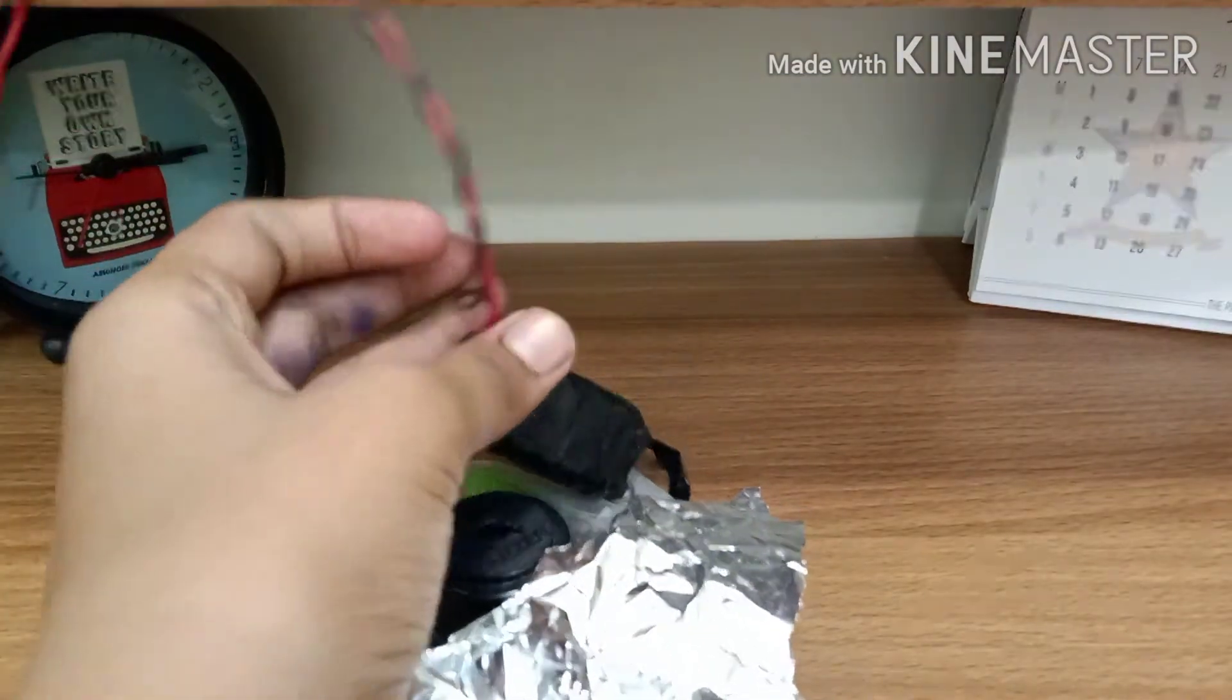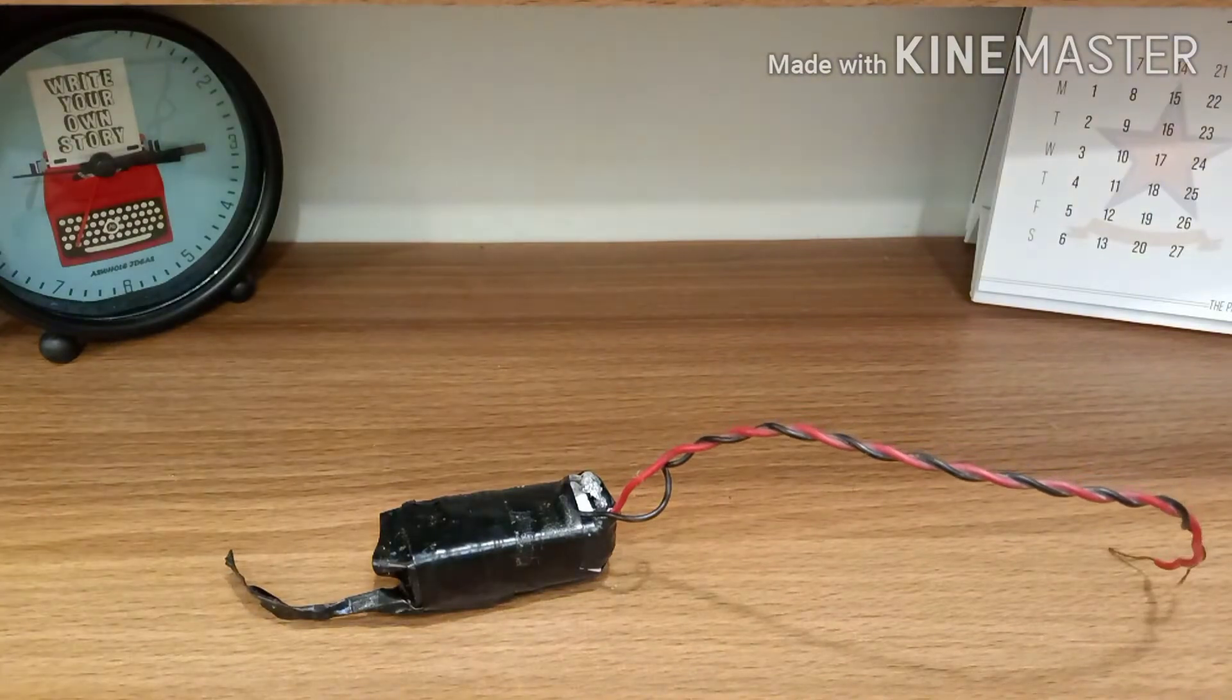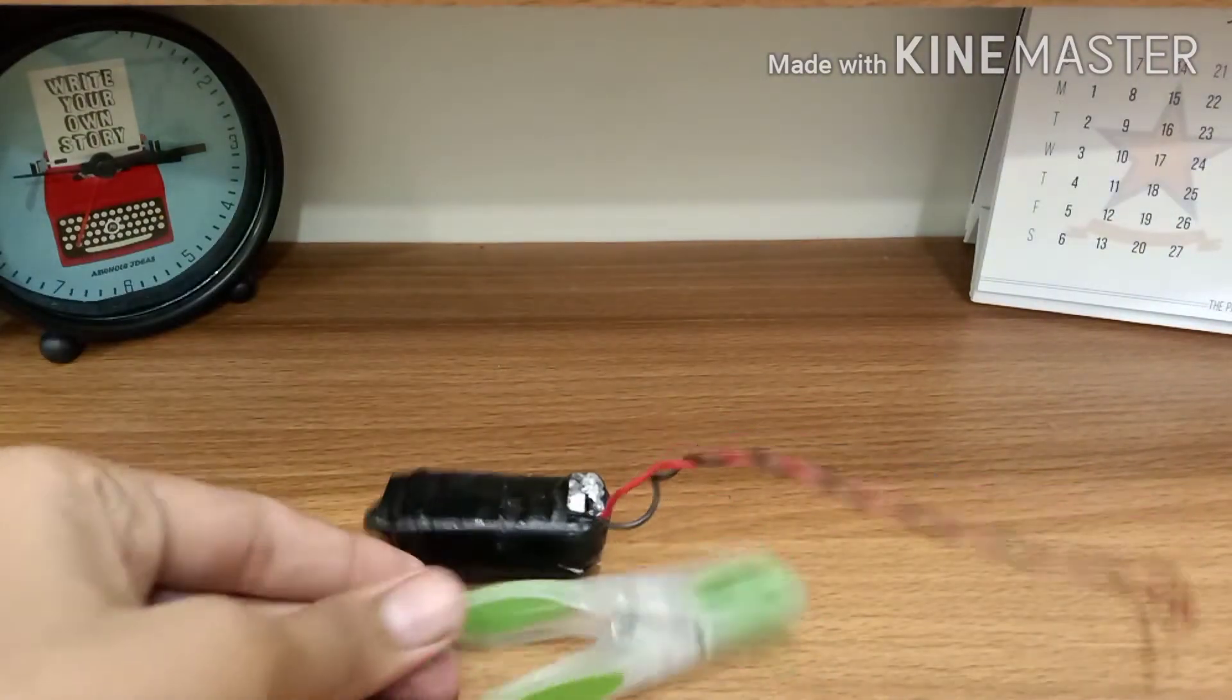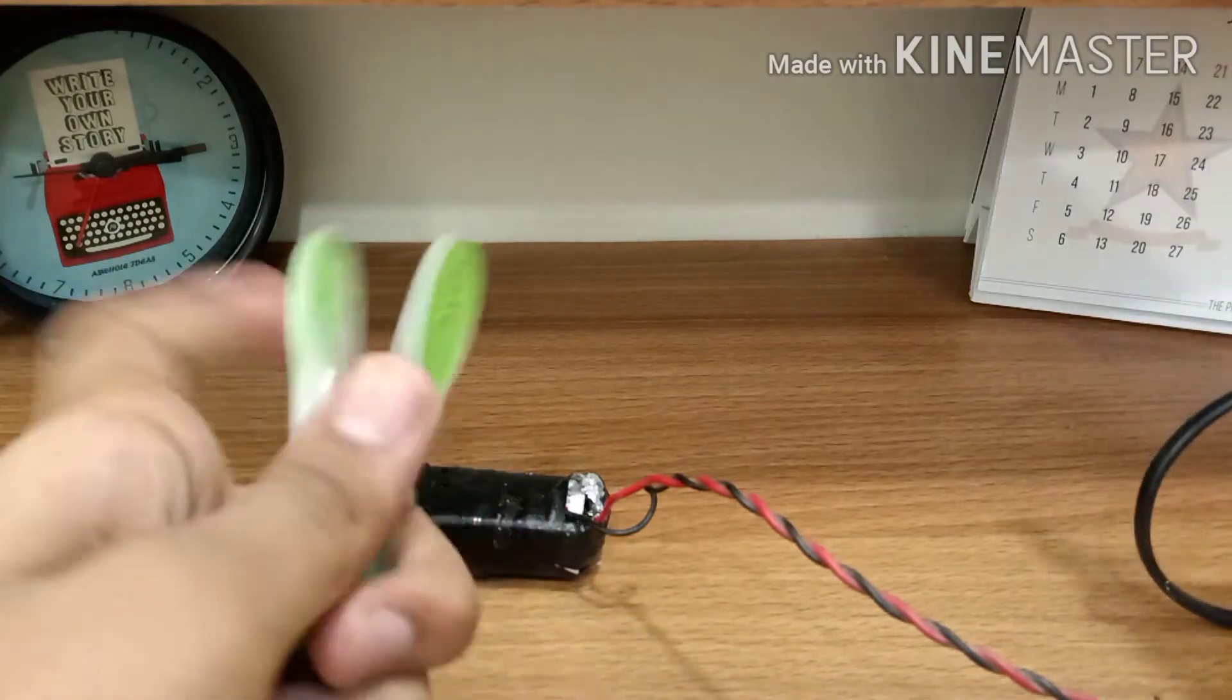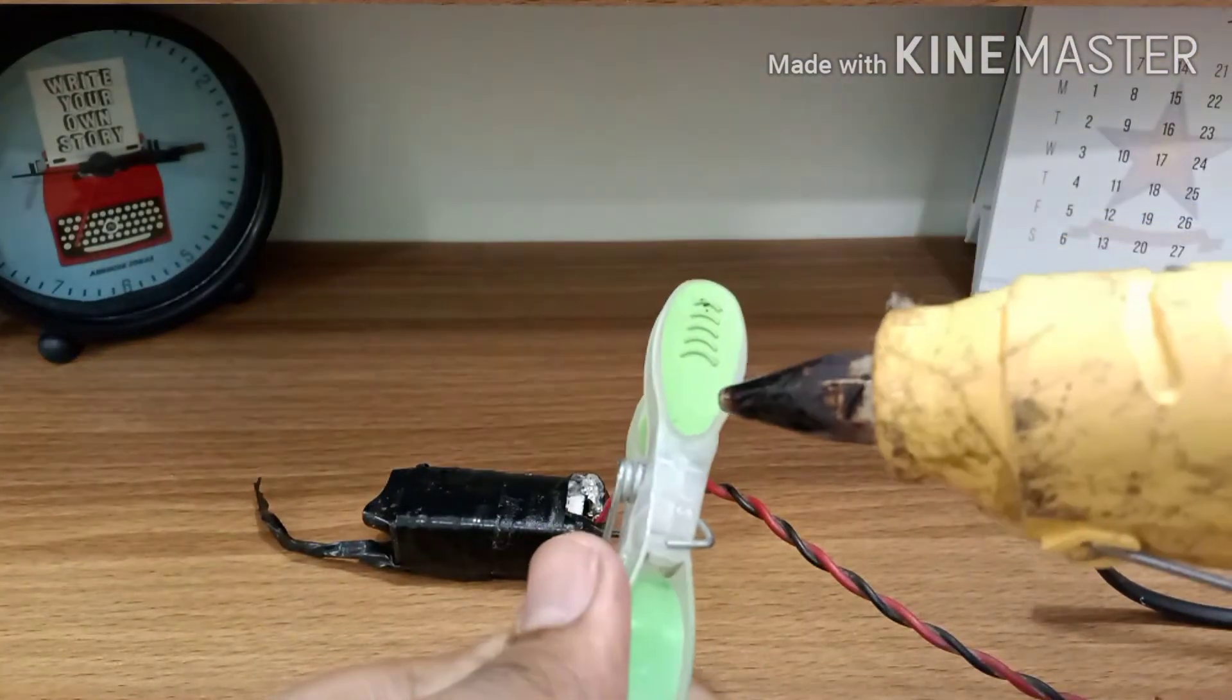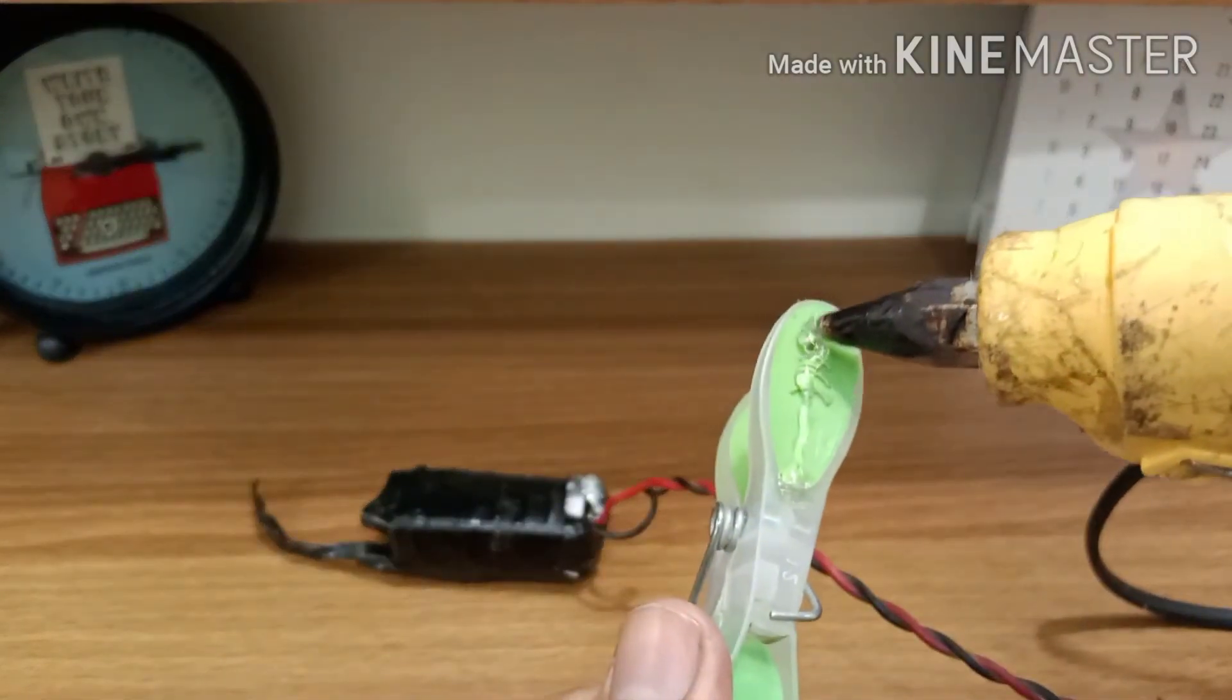Take your battery and plastic clip. Now paste some hot glue on the plastic clip and stick the battery to the plastic clip.